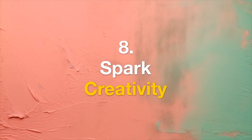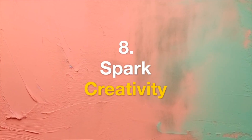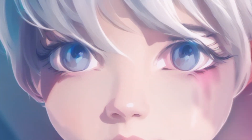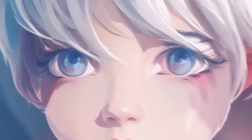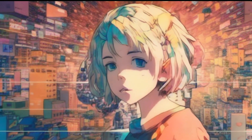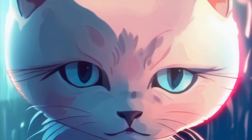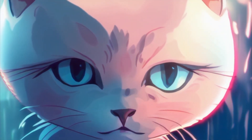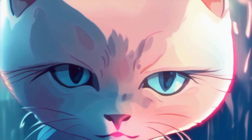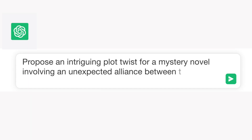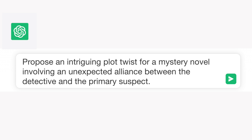Tip 8: Spark Creativity. Use ChatGPT as a creative catalyst. Engage it in generating story ideas, character names, plot twists, or even imaginative scenarios. Example: "Propose an intriguing plot twist for a mystery novel involving an unexpected alliance between the detective and the primary suspect."